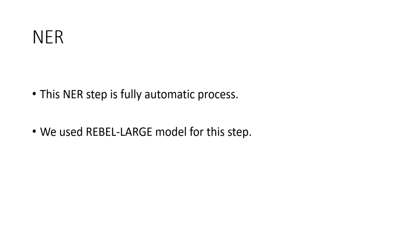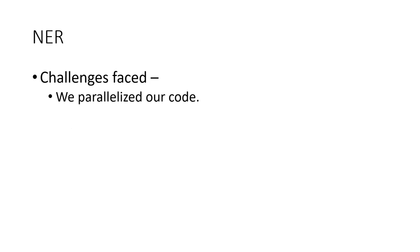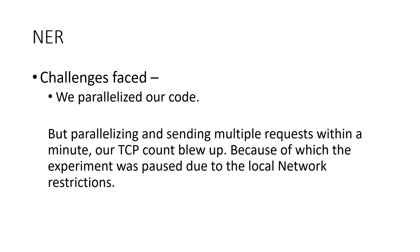This NER step is a fully automatic process and we used the REBEL large model for it. We faced some challenges: the Wikipedia API is slow, returning results in around five seconds normally, but when processing longer texts with multiple requests it slows down to around 20 seconds. We tried parallelizing our code, but this caused our TCP count to blow up, and due to local network restrictions our experiment was paused.